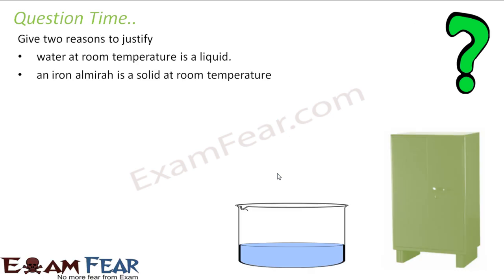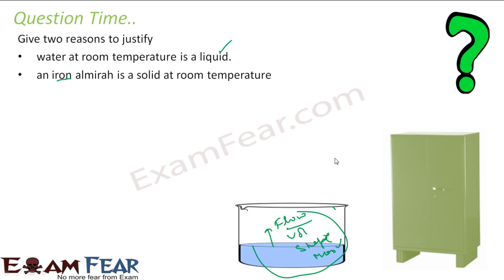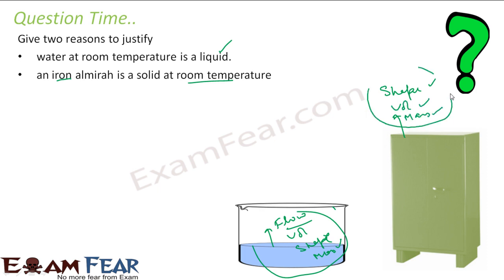Give reason to justify water at room temperature is liquid. Water at room temperature flows easily, has definite volume, doesn't have definite shape, and has definite mass — all these properties prove it is liquid. If you talk about an iron almirah at room temperature, it has definite shape, definite volume, and definite mass; it can't flow. All these properties tell you it is solid. Note this is at room temperature — the iron almirah at maybe 5,000°C would be liquid.